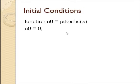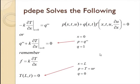Then our initial conditions, pdex1ic for initial conditions. It's a function of x, so u0 is just zero. This sets up all of the initial temperatures to be zero for all x.